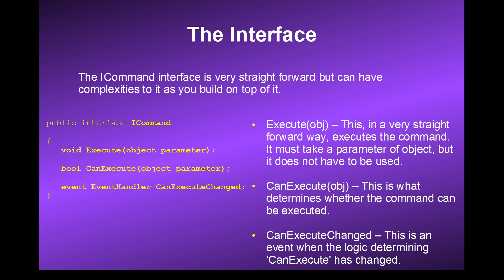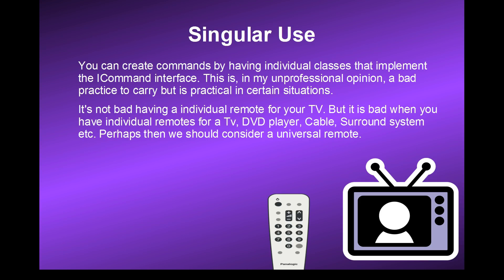Execute must take a parameter of object but it does not have to be used. CanExecute takes an object parameter and determines whether or not the command can be executed — it returns a boolean value. Then we have our CanExecuteChanged event, which is fired when the logic that determines CanExecute has changed. You can create commands by having individual classes that implement the ICommand Interface, which is, in my opinion, a bad practice in many cases but practical in certain situations.